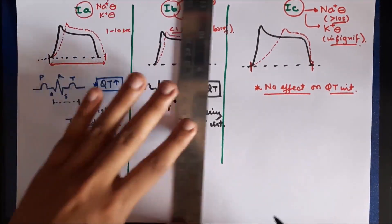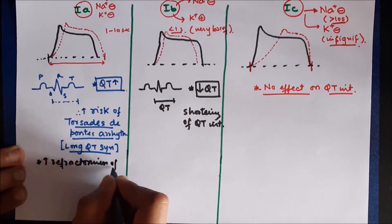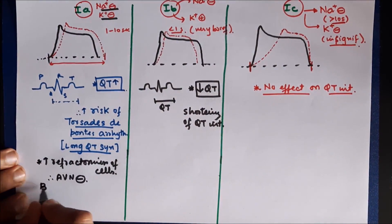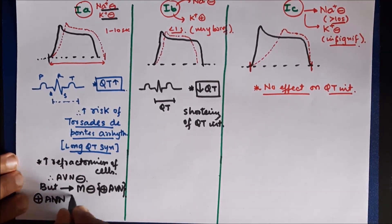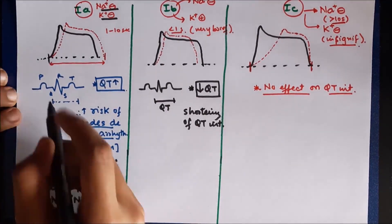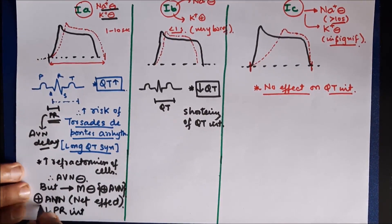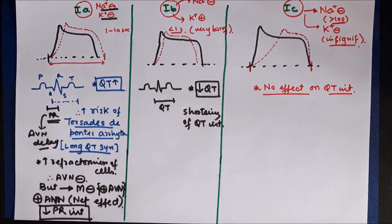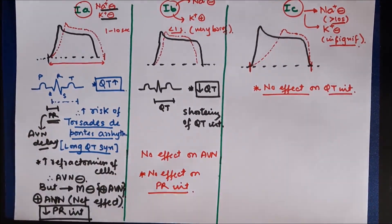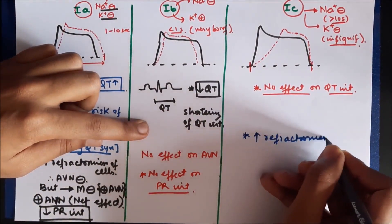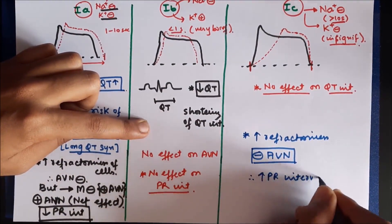Now let us discuss the effect of these drugs on conduction through the AV node, reflected as the PR interval on the ECG. Class 1a drugs block sodium and potassium channels decreasing AV conduction, but they also have anti-muscarinic effects which increase AV conduction — the net effect is increased conduction through the AV node, resulting in shortening of the PR interval. Class 1b drugs have no significant effect on refractoriness, so no effect on PR interval. Class 1c drugs increase refractoriness and lack anticholinergic properties, so their net effect is decreased AV conduction, resulting in increased PR interval.